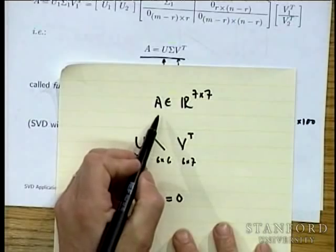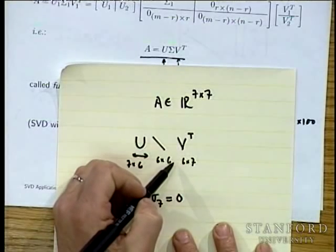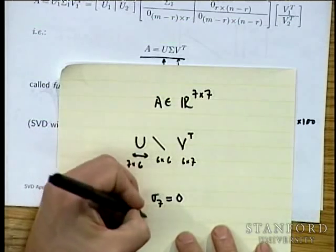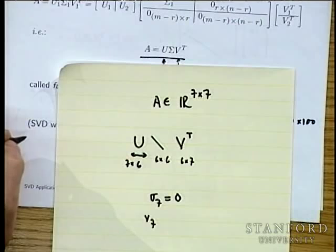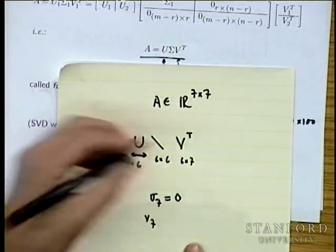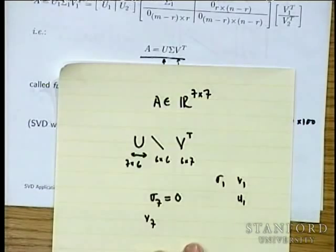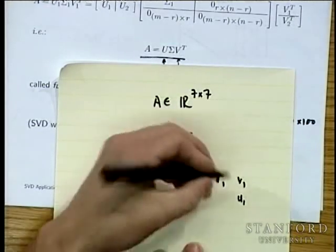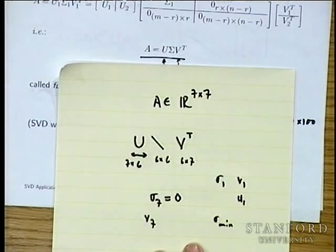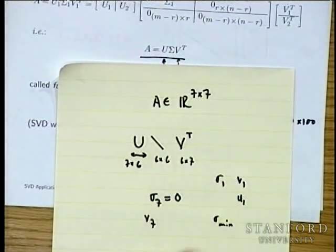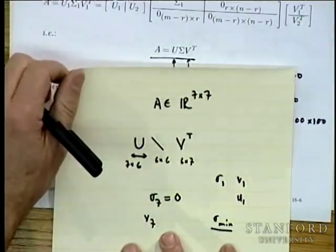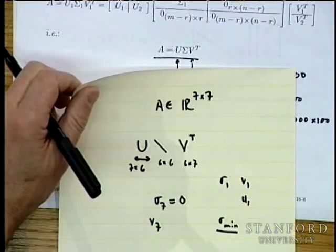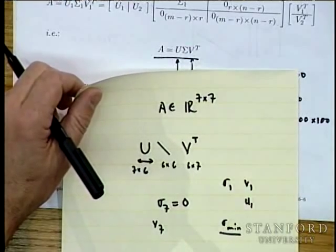There are applications where you want to talk about the zero singular value, because the minimum gain of a rank-6 matrix is zero. People then talk about V₇, which describes the null space of A. So while σ₁, V₁, U₁ are unambiguous, if someone writes σ_min you have to be careful: do they mean the minimum of the positive ones, or the actual minimum, which would be zero? Just ask, because it depends on context.